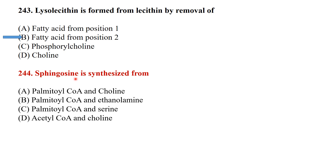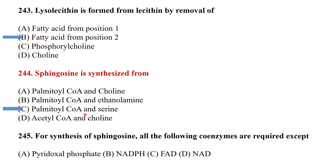Sphingosine is synthesized from palmitoyl CoA and serine. For synthesis of sphingosine, all of the following coenzymes are required EXCEPT NAD — NAD is not required for sphingosine synthesis.